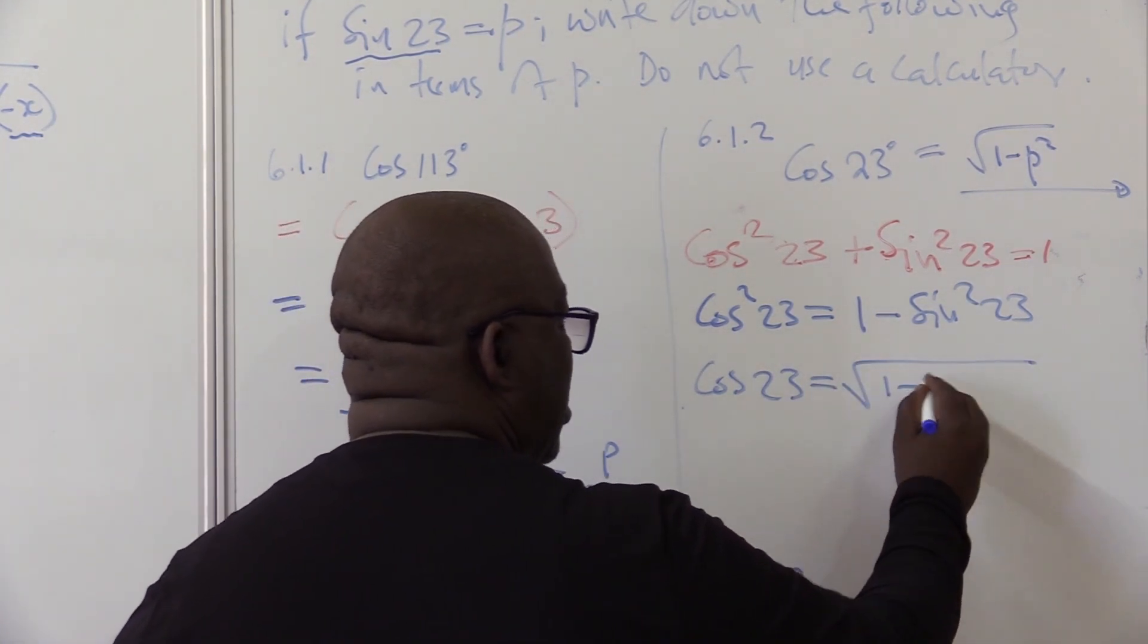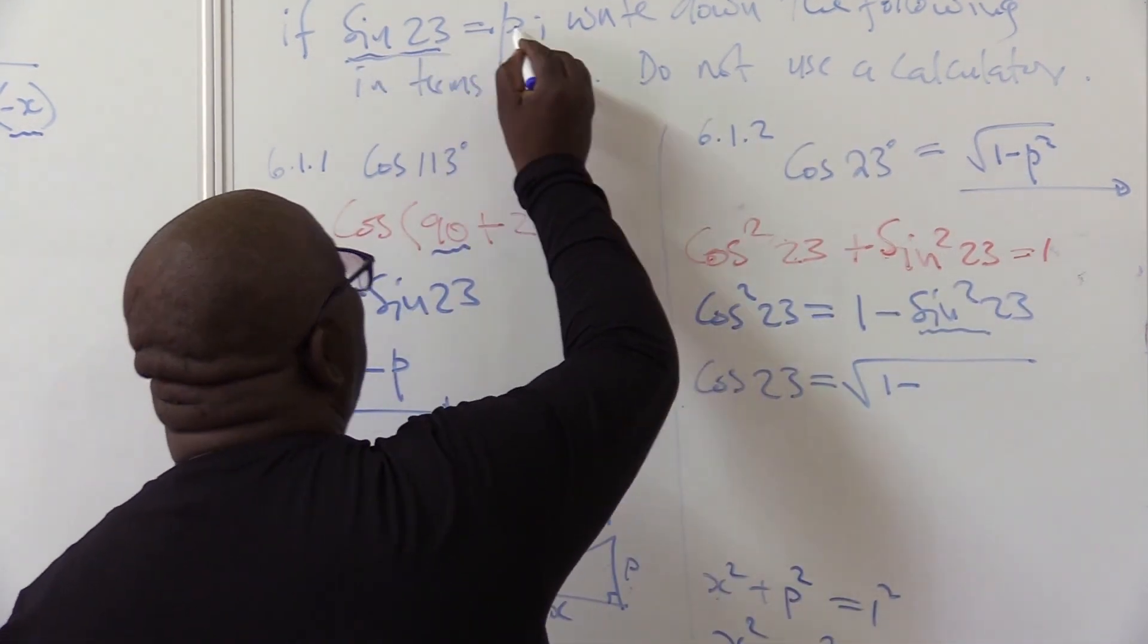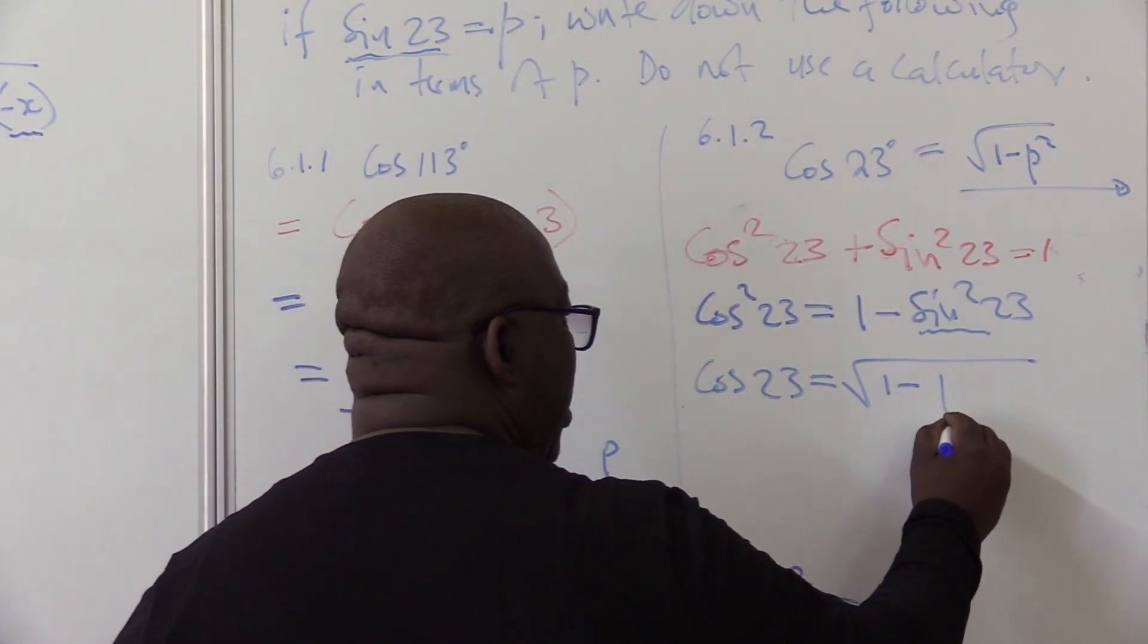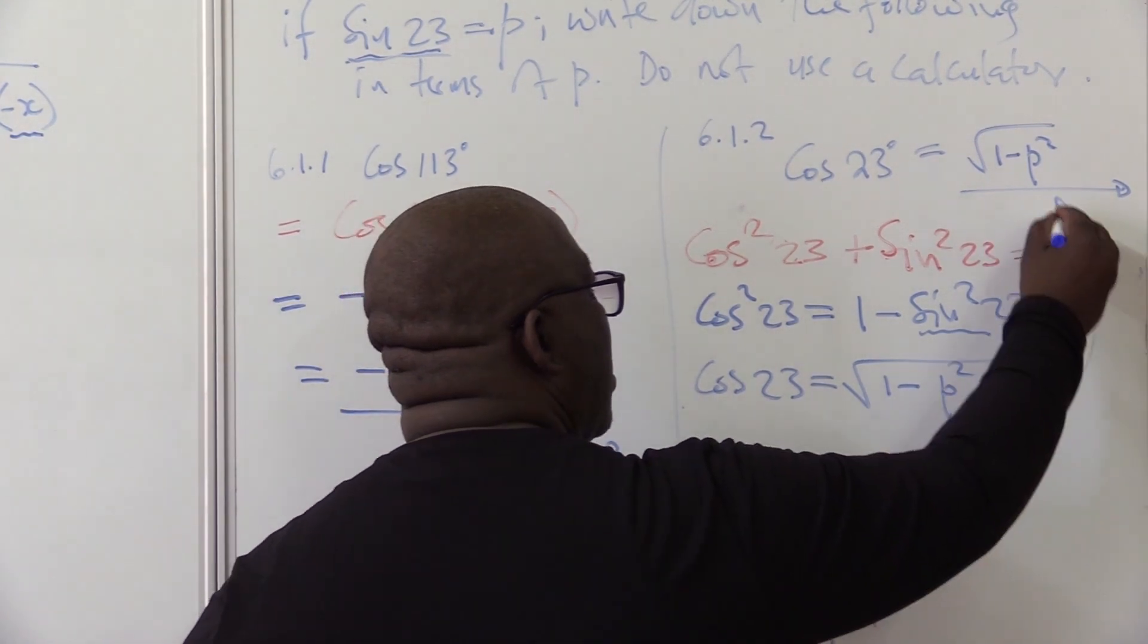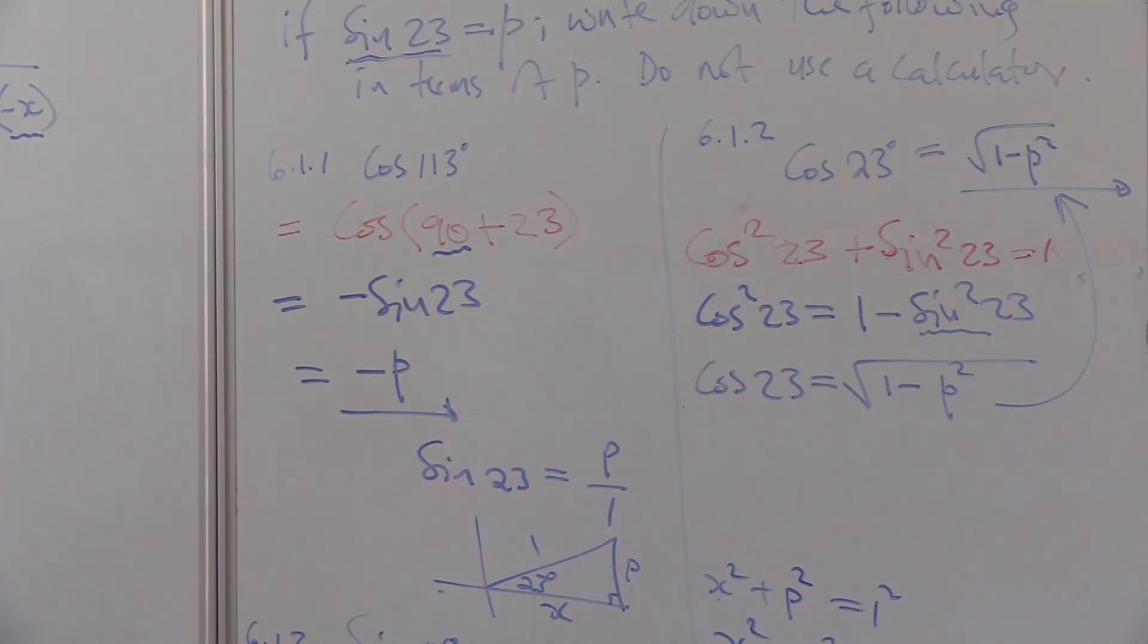1 minus what? But what is sine 23? Sine 23 was given as P, so it is 1 minus P squared. It is exactly the same as that one. You can choose whatever root that will satisfy you.